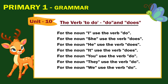For the noun I, use the verb do. For the noun she, use the verb does. For the noun he, use the verb does. For the noun it, use the verb does. For the noun you, use the verb do. For the noun they, use the verb do. For the noun we, use the verb do.